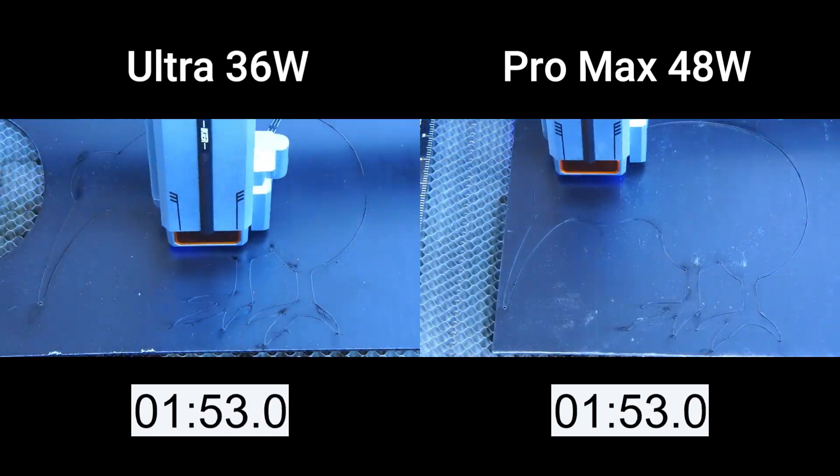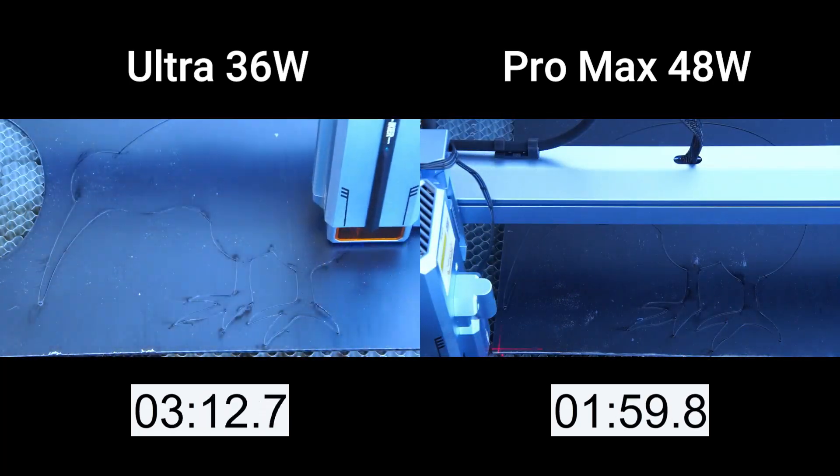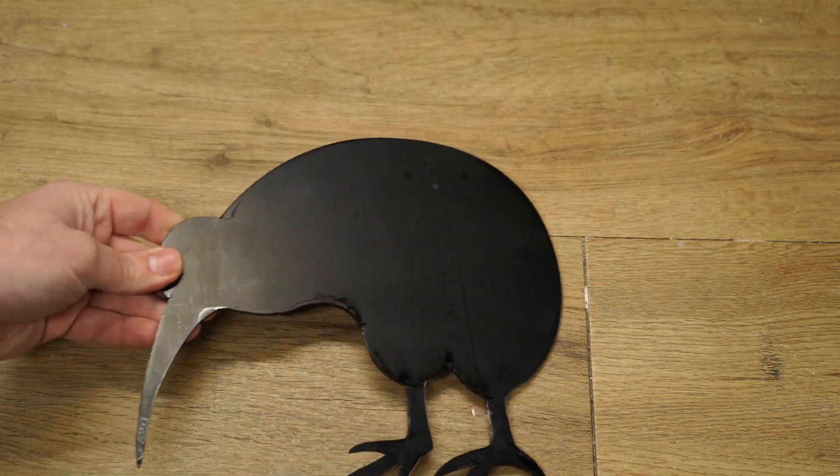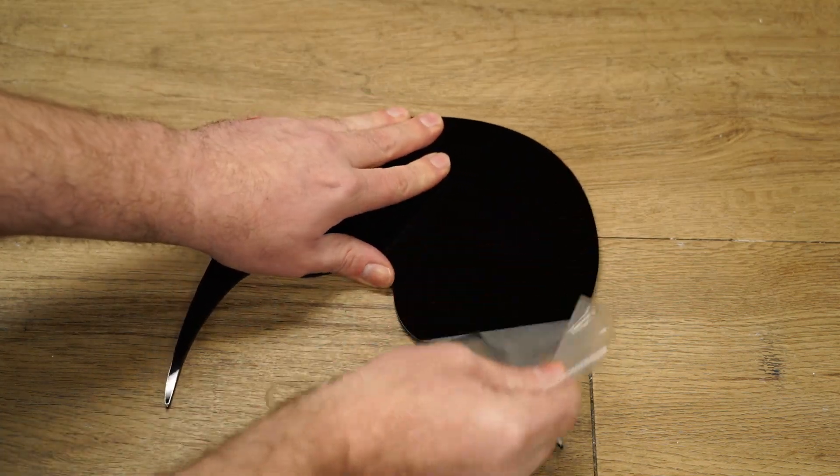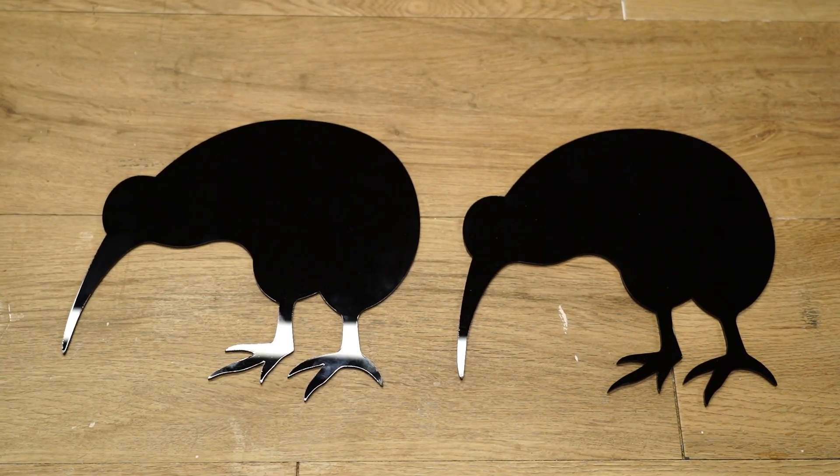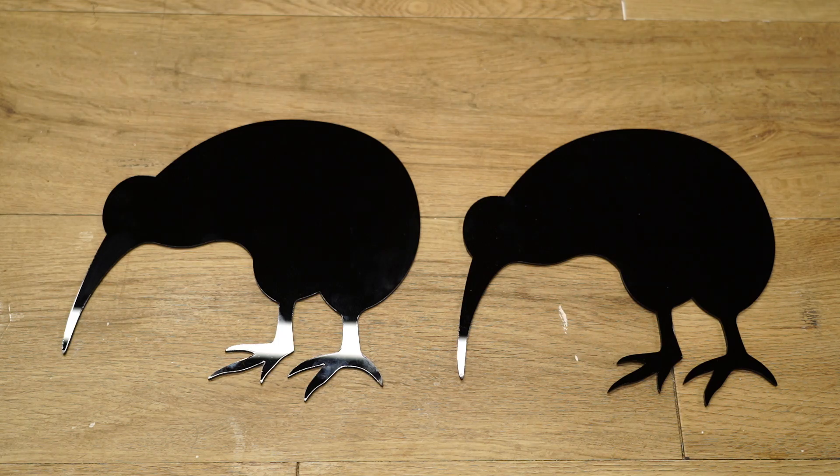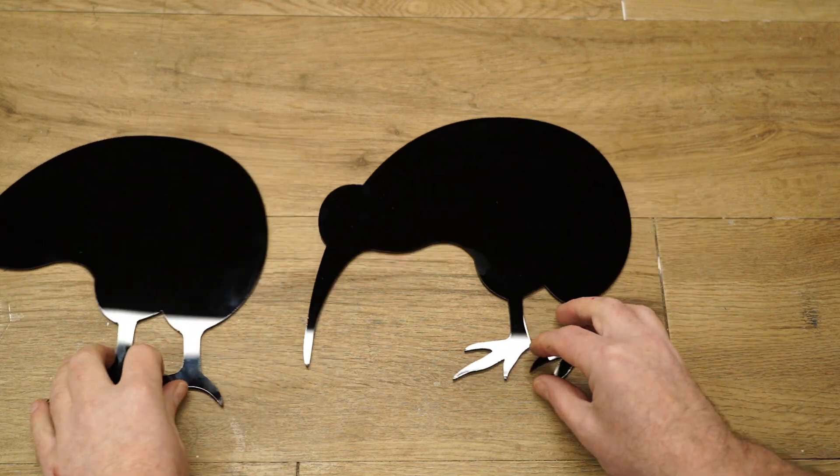At the time of making this video the Pro Max is about $350 more than the Ultra. For your extra money you gain about 30 percent faster cutting performance. In terms of cut quality and finished product, the two are identical. Both machines are equally good in terms of cutting capacity, so it really boils down to a speed advantage for the Pro Max rather than capabilities.